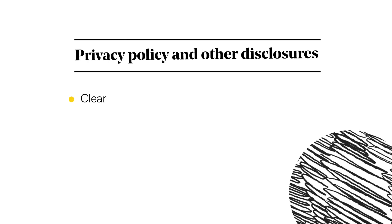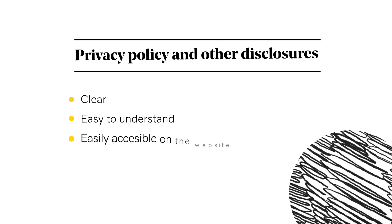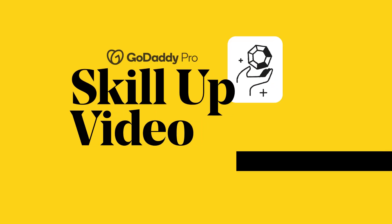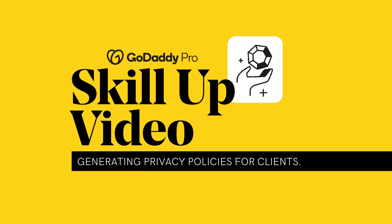Make sure the privacy policy and other disclosures are clear, easy to understand, and easily accessible on the website. The privacy policy should state how a user's visit is tracked and how their information is used. If you need more advice on devising a clear privacy policy for clients, view the Skill Up video, Generating Privacy Policies for Clients.